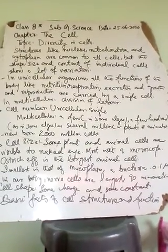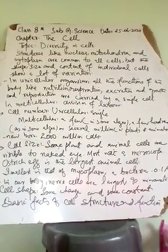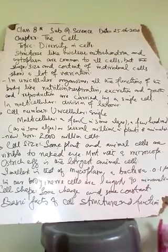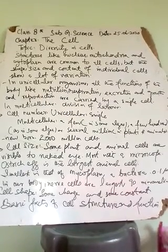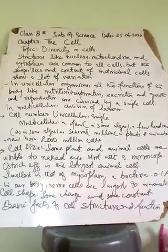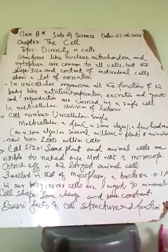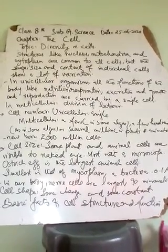A group of cells shows variability in their shape, size, and other features depending on the function they perform. For example, nerve cells are long in size — they do communication between body parts, taking messages to the brain and spinal cord and then bringing messages back.